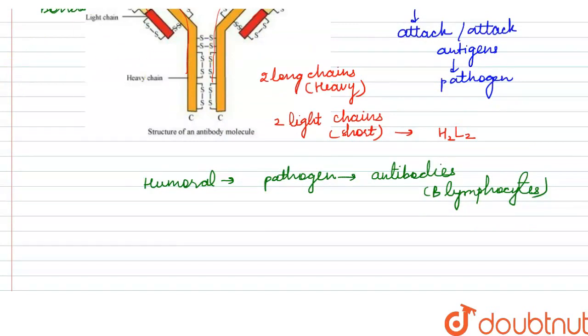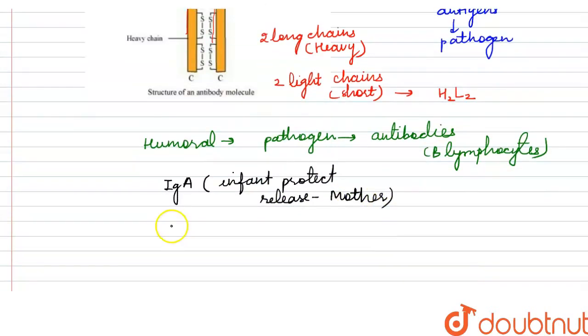The main antibodies we study are IgA. IgA antibody protects the infant and is released by the mother. Its formation happens in the infant's mother.